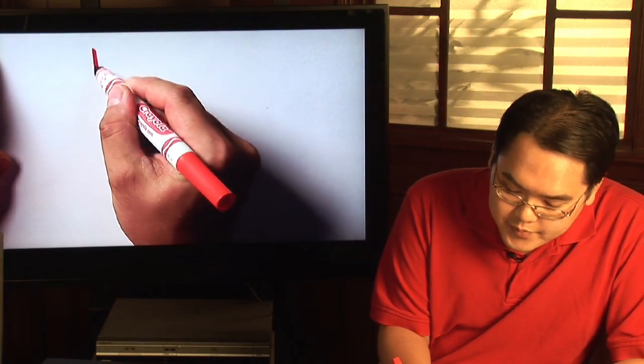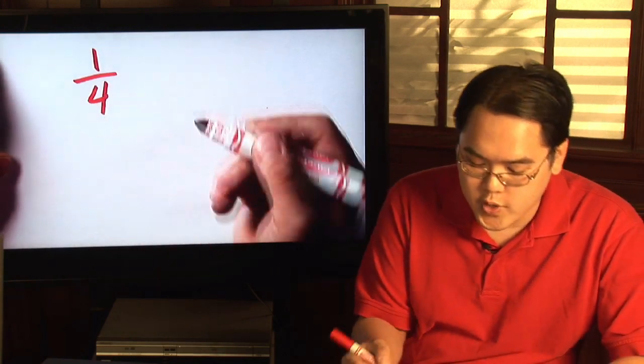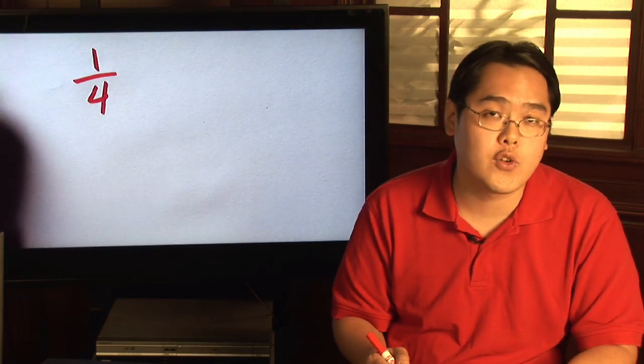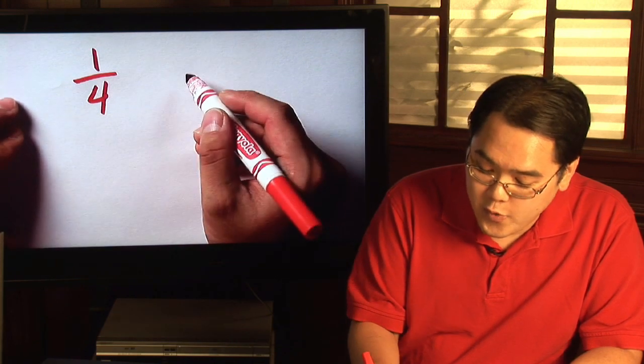So here's an example. Suppose you want to take the ratio one over four, which is one fourth, and you want to convert that to a decimal form.